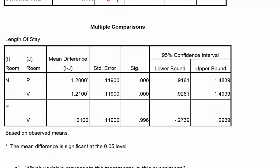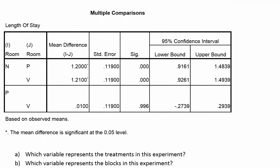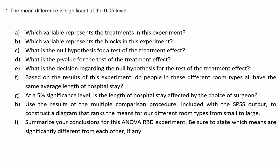They've also given us a set of multiple comparisons, which means they actually compared the separate means to one another. Since we had a small p-value for treatments, the treatment effect is significant, meaning there's a difference between the different treatment means. We don't know which means differ from each other unless we perform a multiple comparison procedure like the one done here using SPSS. The first question asks which variable represents the treatments in this experiment — that would be the rooms.